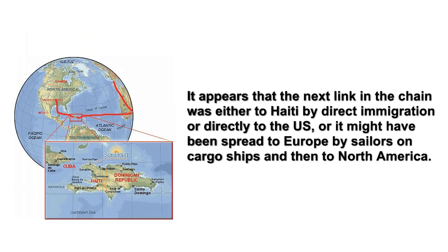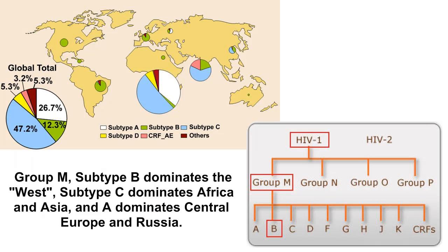It appears that the next link in the chain was either to Haiti by direct immigration, or directly to the U.S., or it might have been spread to Europe by sailors on cargo ships and then to North America. The data's a bit spotty, but the emergence in the major cities of Europe was slightly after the disease was documented in New York and San Francisco. Asia and Russia may have been infected by a second wave of emergence, as their subtype profiles are markedly different than the European and North American subtypes. South America, Australia, and Northwest Asia are a possible third wave emergence.